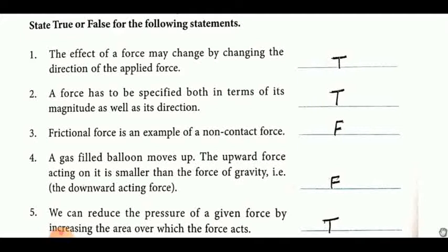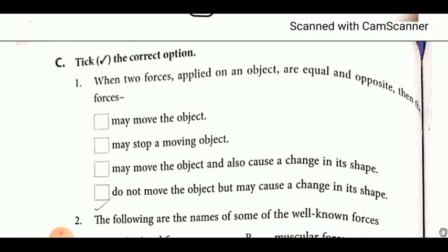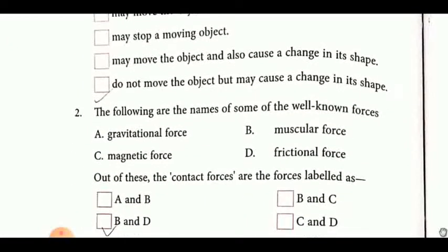This was the true and false. Now we are coming on tick the correct options. First is, when two forces applied on an object are equal and opposite, then the force is - what will happen? Equal and opposite means it will be balanced. And if it's balanced, the object won't move. May move the object? No, its motion state won't change because equal and opposite. May move the object and also cause a change? It won't move. So, do not move the object, but yes, if something is going to be pressed, compressed, then its shape will change.